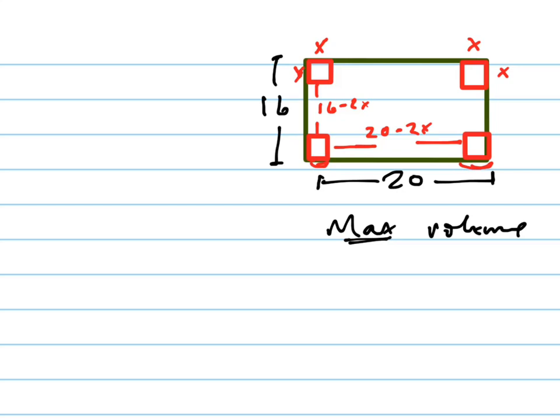And then what's the height? X. The height is x. If you can imagine these being turned up, so your box is going to have three dimensions. Your volume of your box is going to be x, that's the height, times 16 minus 2x, times 20 minus 2x. That's your volume, or those are the different volume expressions that you can have.